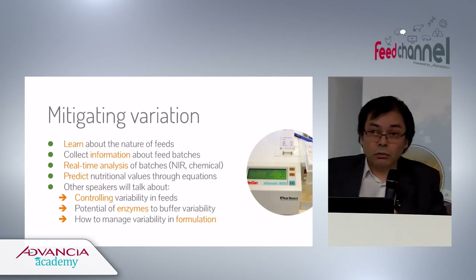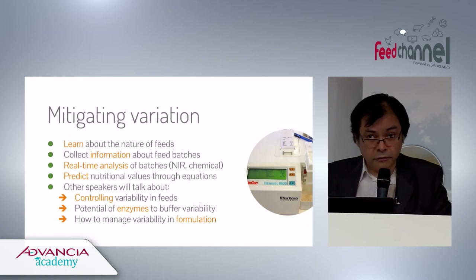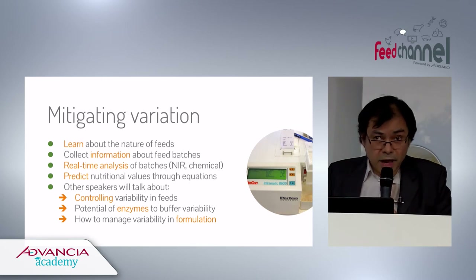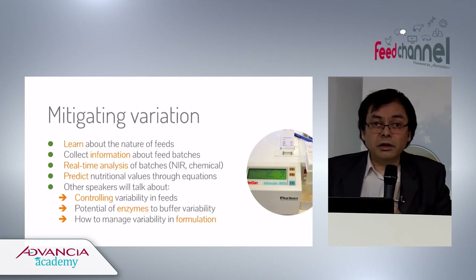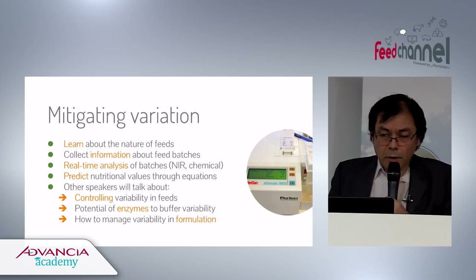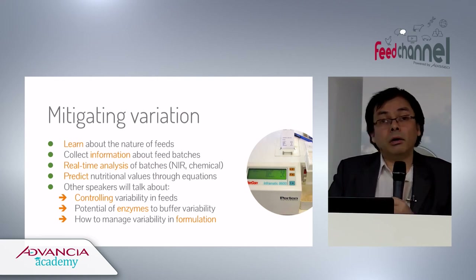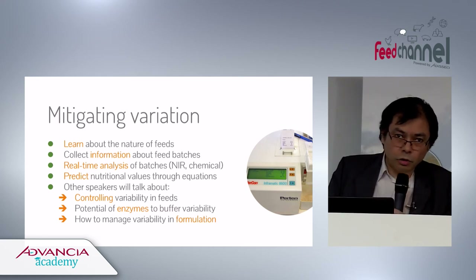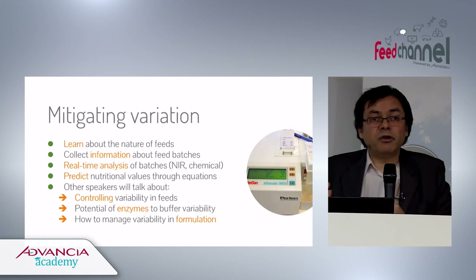Mitigating variation is the topic of today. We need to learn about feeds — rice bran is not just rice bran, but a family of products. We need to collect information about each batch, including origin and exact product type. We need real-time analysis using chemical methods or NIR, and we need to predict nutritional value based on chemical composition and in vitro measurements. Other speakers will address buffering variability using enzymes or dealing with variability through formulation.